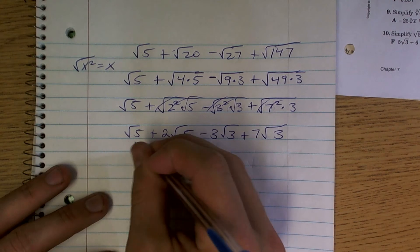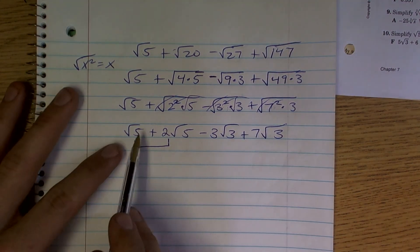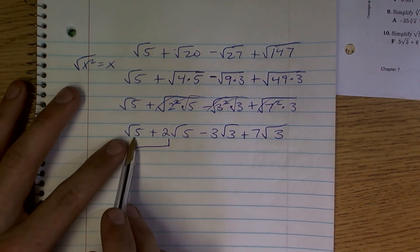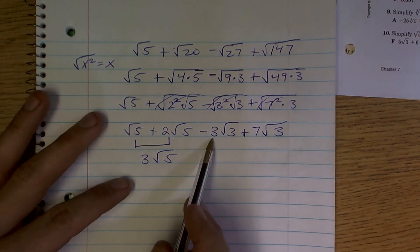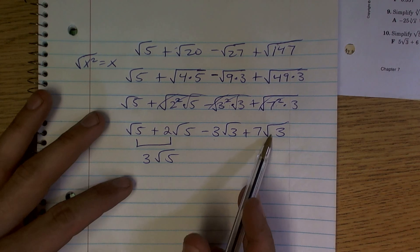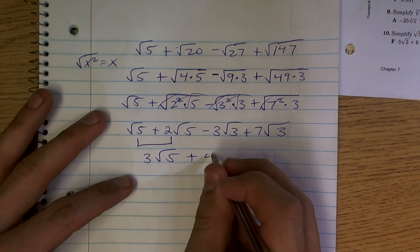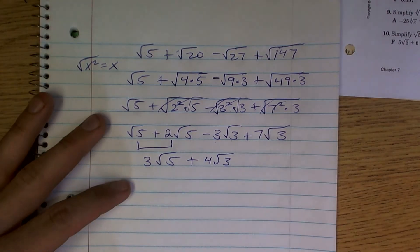Now it's just combining like terms. Since these are like terms, they both have square root of 5, 1 square root of 5 plus 2 square root of 5 is going to leave us with 3 square root of 5, and then negative square root of 3 plus 7 square root of 3 is going to leave us with a positive 4 square root of 3.